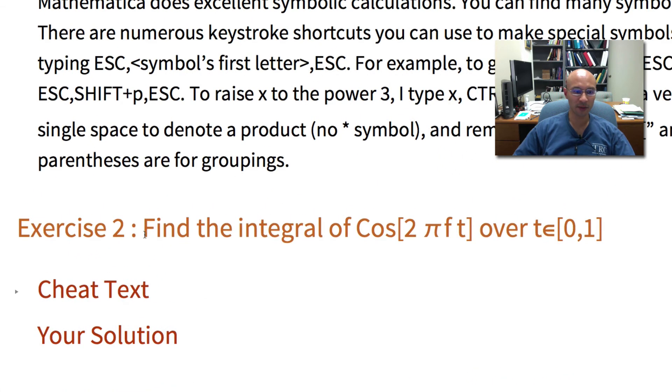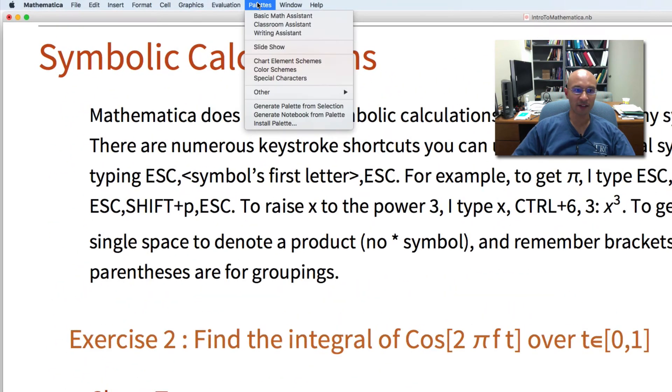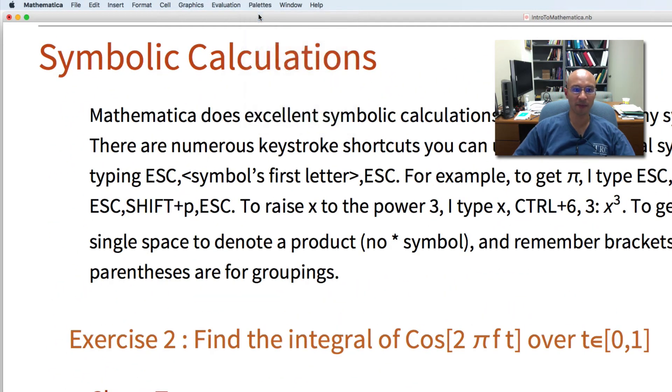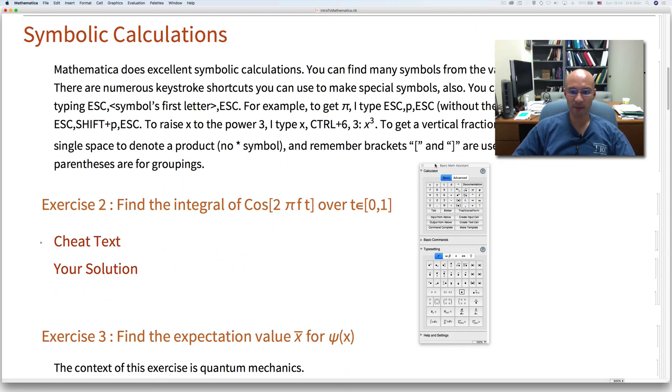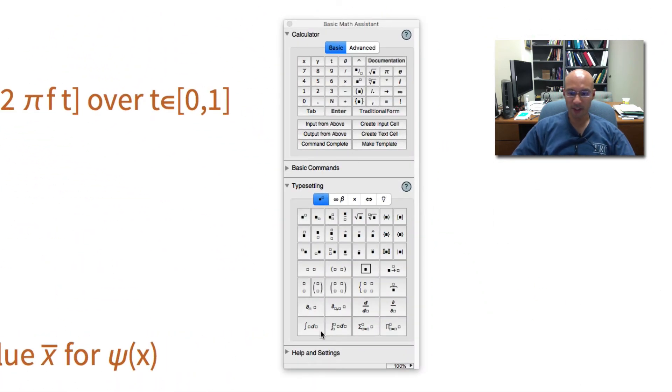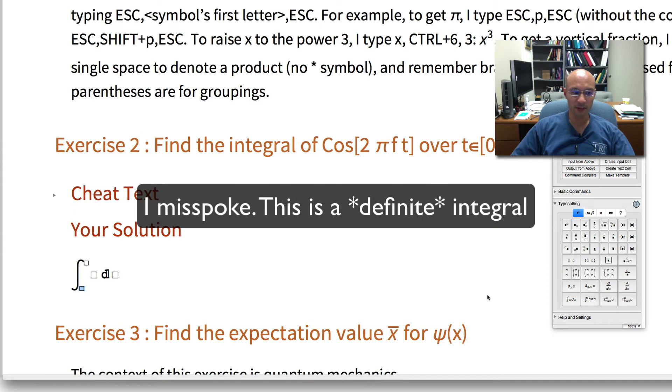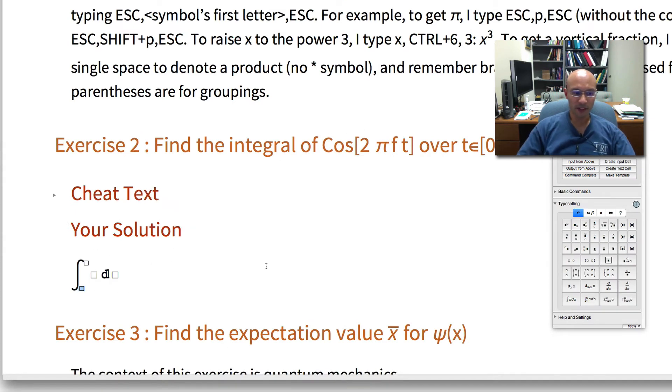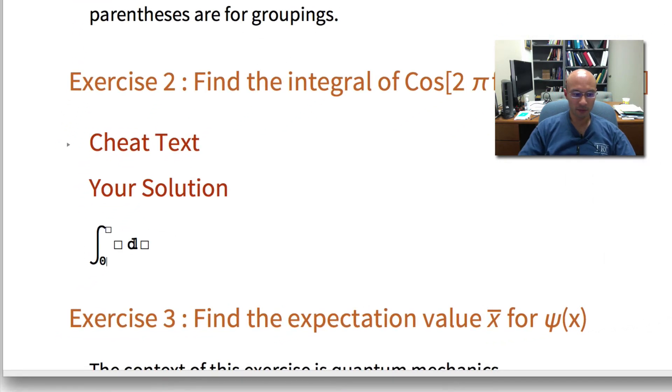So let's do this exercise 2. We're looking for the integral of cosine 2 pi of t over t goes from 0 to 1. So I'll just get a palette. So here's palettes and I'll pick the basic math assistant palette. Here's the basic math assistant palette. And we see here a definite integral. It's definite because it has limits. So what I do is I put in 0 here and then I click here and I get, I put the 1 in and then cosine.